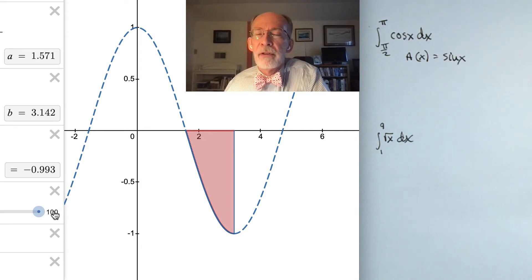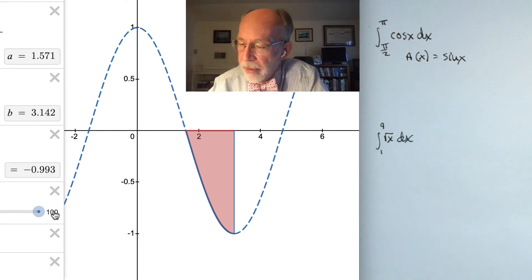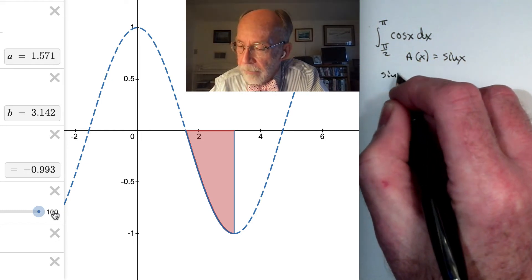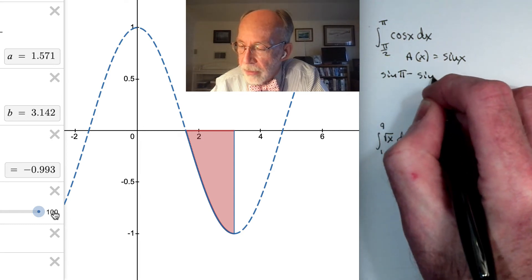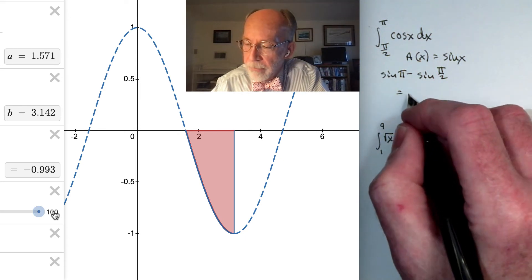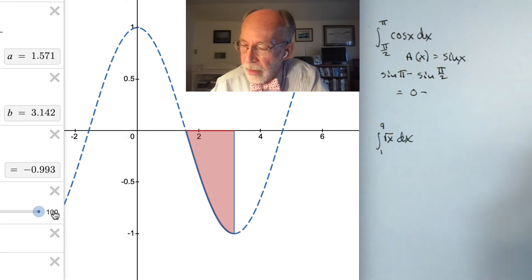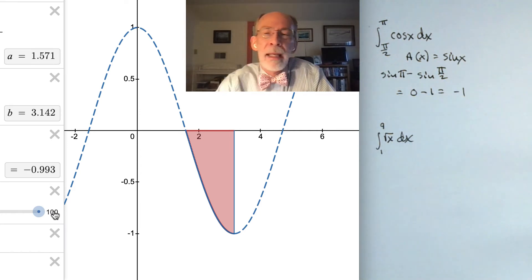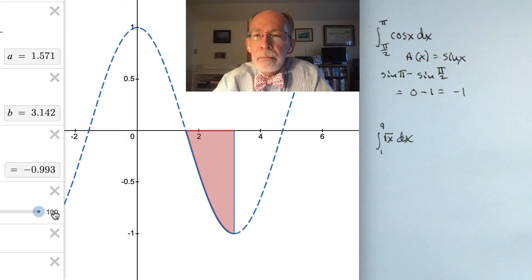So if we believe the first example, then the area function for the cosine ought to be the function that has the cosine as its derivative, and that is the sine. And so the area from π/2 to π ought to be the area from 0 to π, which is, if this pattern holds up, the sine of π minus the area from 0 to π/2, which again if this pattern holds up, would be the sine of π/2. So sine of π is 0, sine of π/2 is 1, 0 minus 1 is -1. And we are within not that many thousandths of having the value that we see in the approximation.